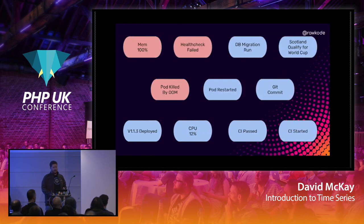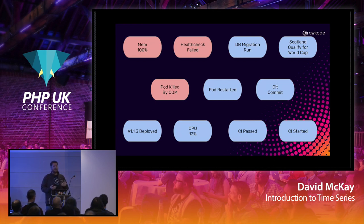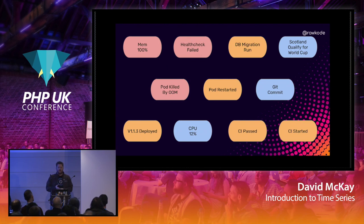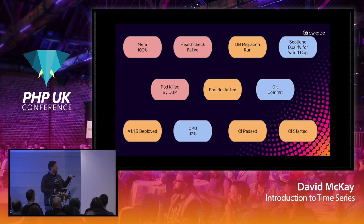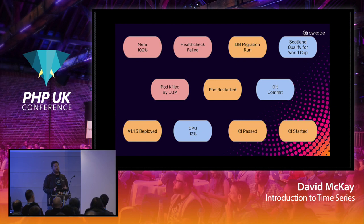Inside our infrastructure, in red we have the memory hitting 100% — a cause for concern. We have a health check failing — something is wrong. And a pod killed by the OOM killer — we don't want that. In orange-yellow we have potential causal events: a database migration running could break the application; a pod restart could lead to problems; deploying a new version could introduce bugs — new versions equal new problems.